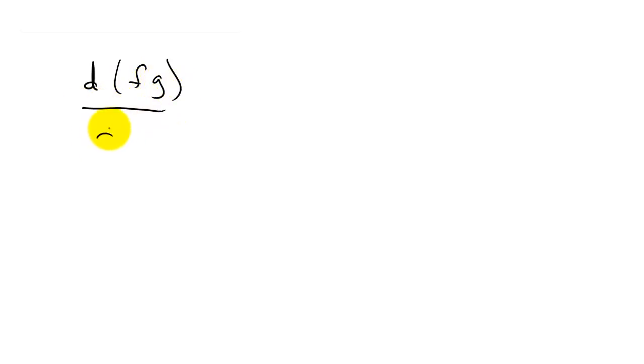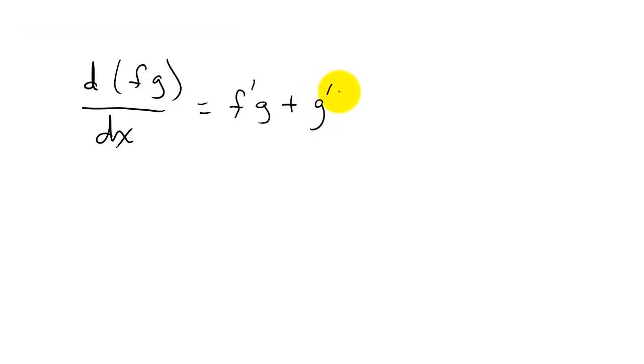In this video, let's take a look at finding the derivative using the product rule. So if we take the derivative of two functions, say f times g, with respect to x, then using the product rule, it's the derivative of the first function times the second function, plus the derivative of the second function times the first function. Let's take a look at some examples.